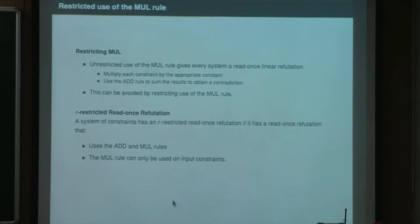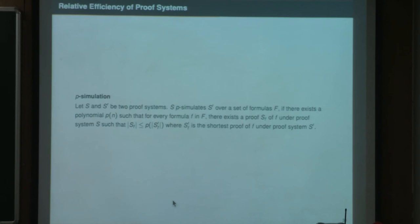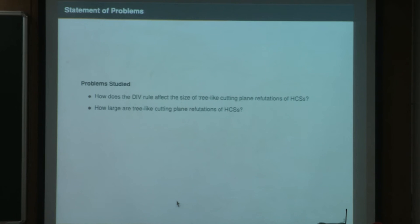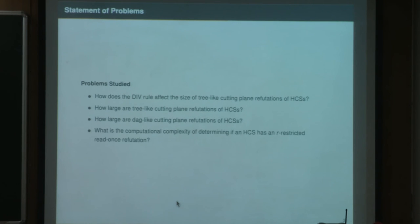Restricting the mul rule: an r-restricted read-once refutation allows the add and mul rules, but mul can only be applied to input constraints with a constant ≤ r. The concept of p-simulation: one proof system p-simulates another if, given a proof in one system, you can produce a proof in the other of at most polynomial length. The principal questions studied are: how does the div rule affect tree-like refutation size, how large are tree-like and dag-like refutations, and what is the complexity of finding r-restricted read-once refutations for horn constraint systems.